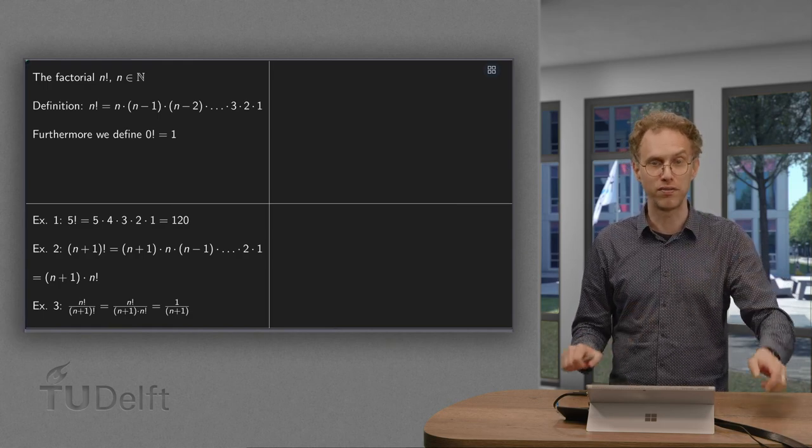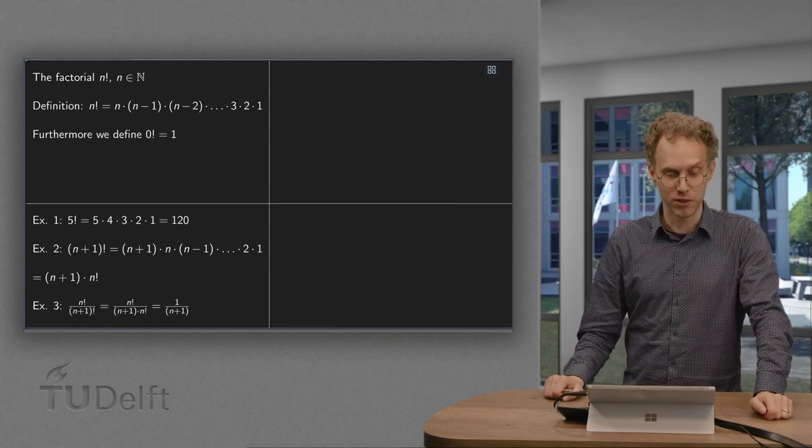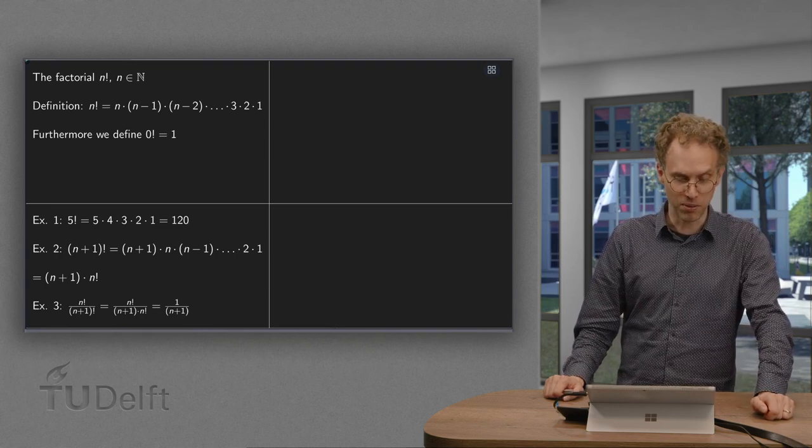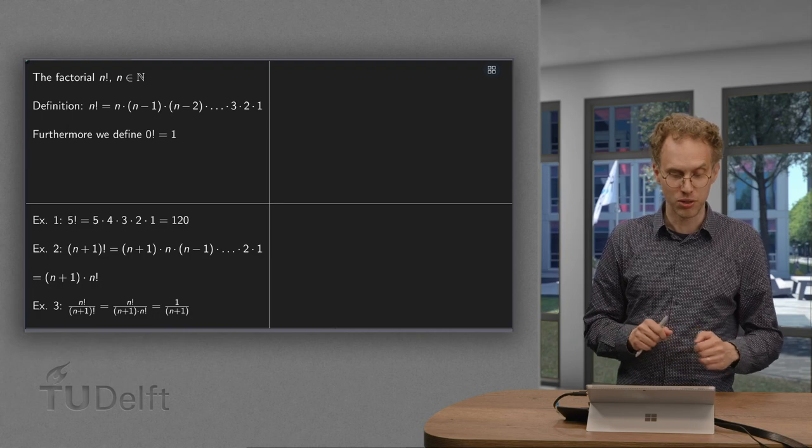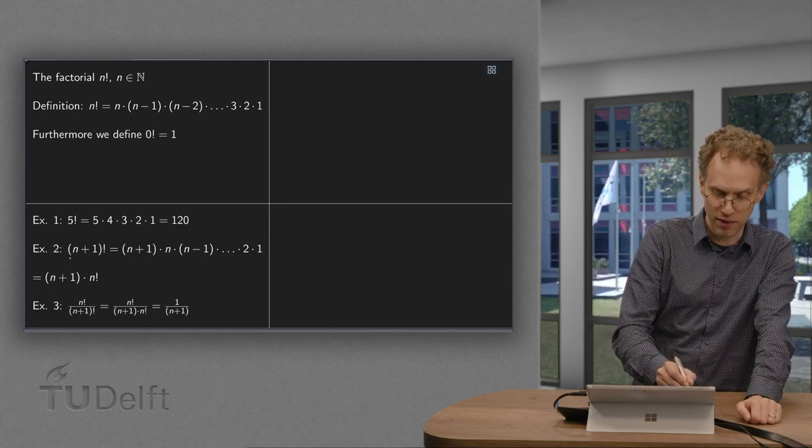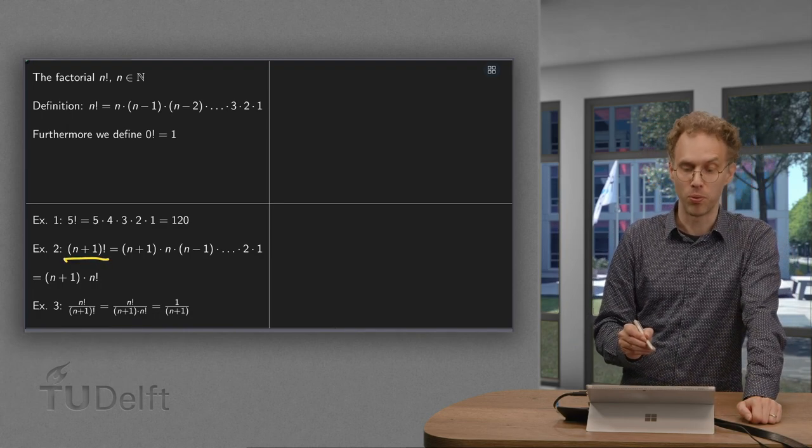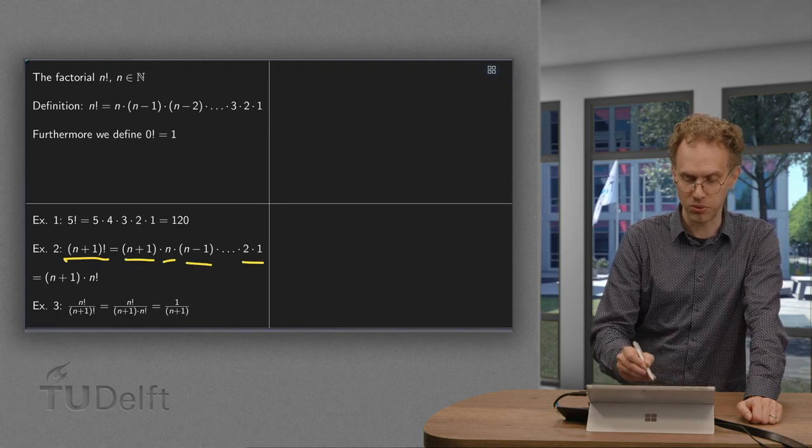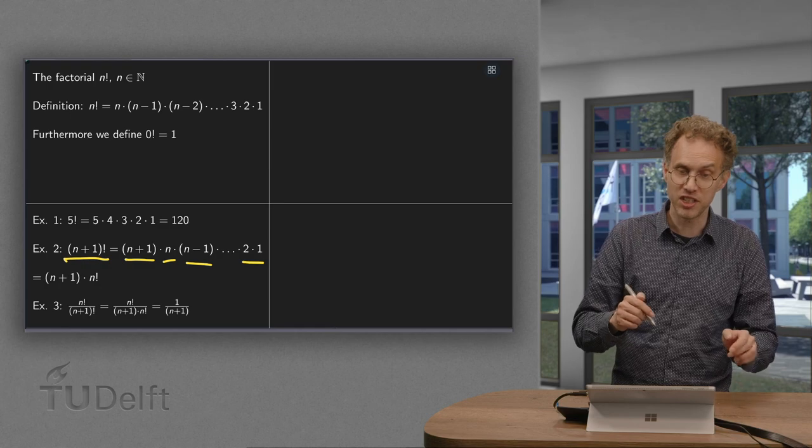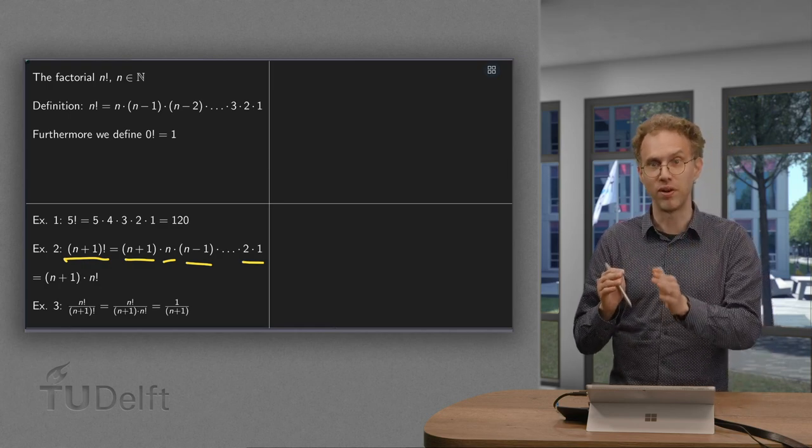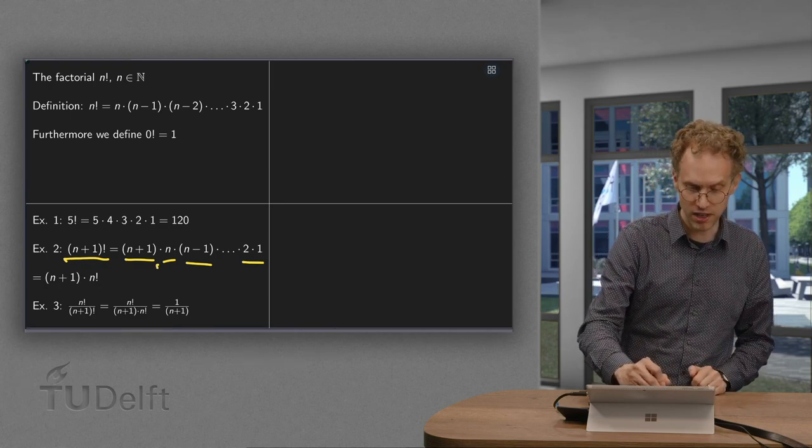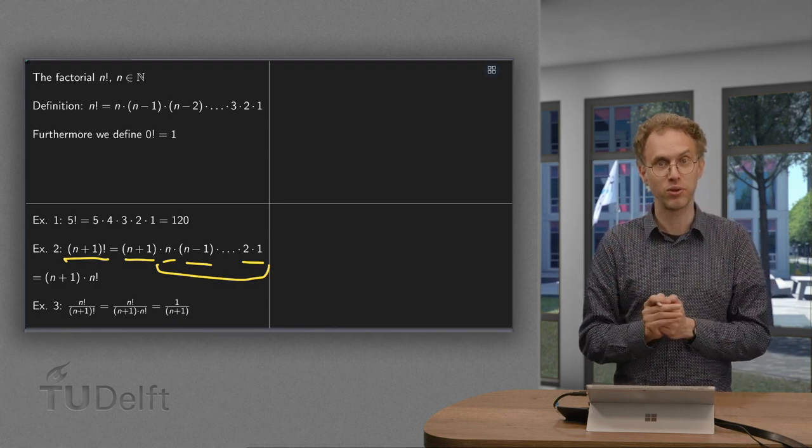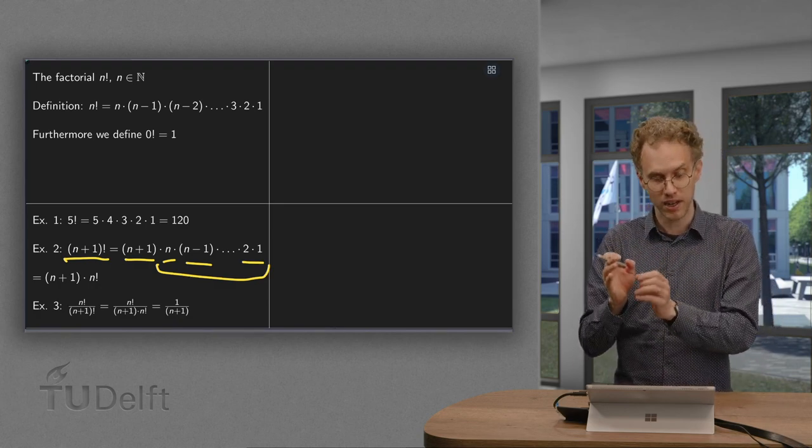And you'll see those numbers grow very fast, like 6 factorial would be 720 and 7 factorial would be a big number already. Then let's do some more examples, like if you have n plus 1 factorial. What's that? So n plus 1 times n times n minus 1 and so on times 2 times 1. However this still reads n times n minus 1 times n minus 2, so this still reads n factorial. So n plus 1 factorial equals n plus 1 times n factorial.